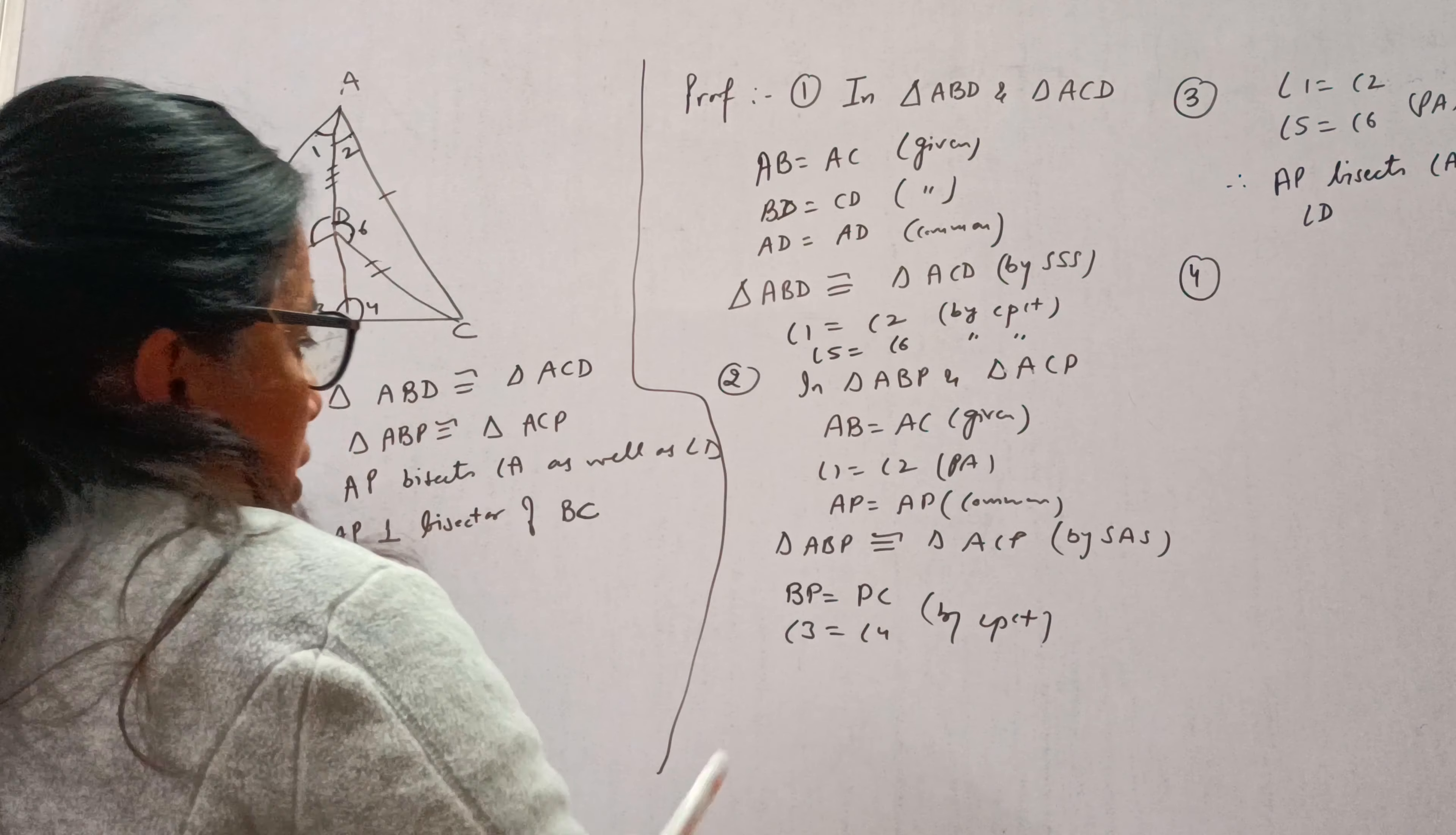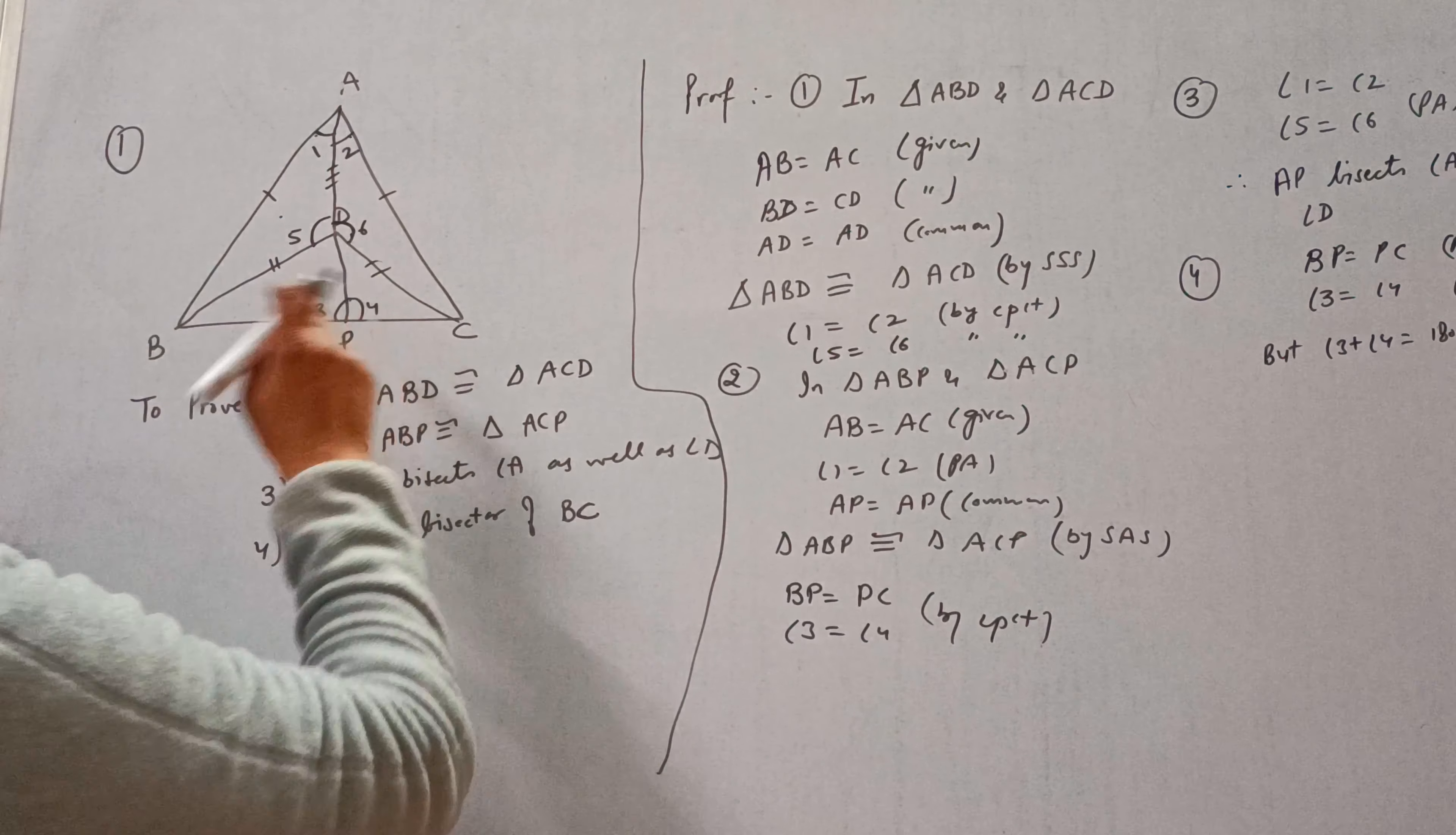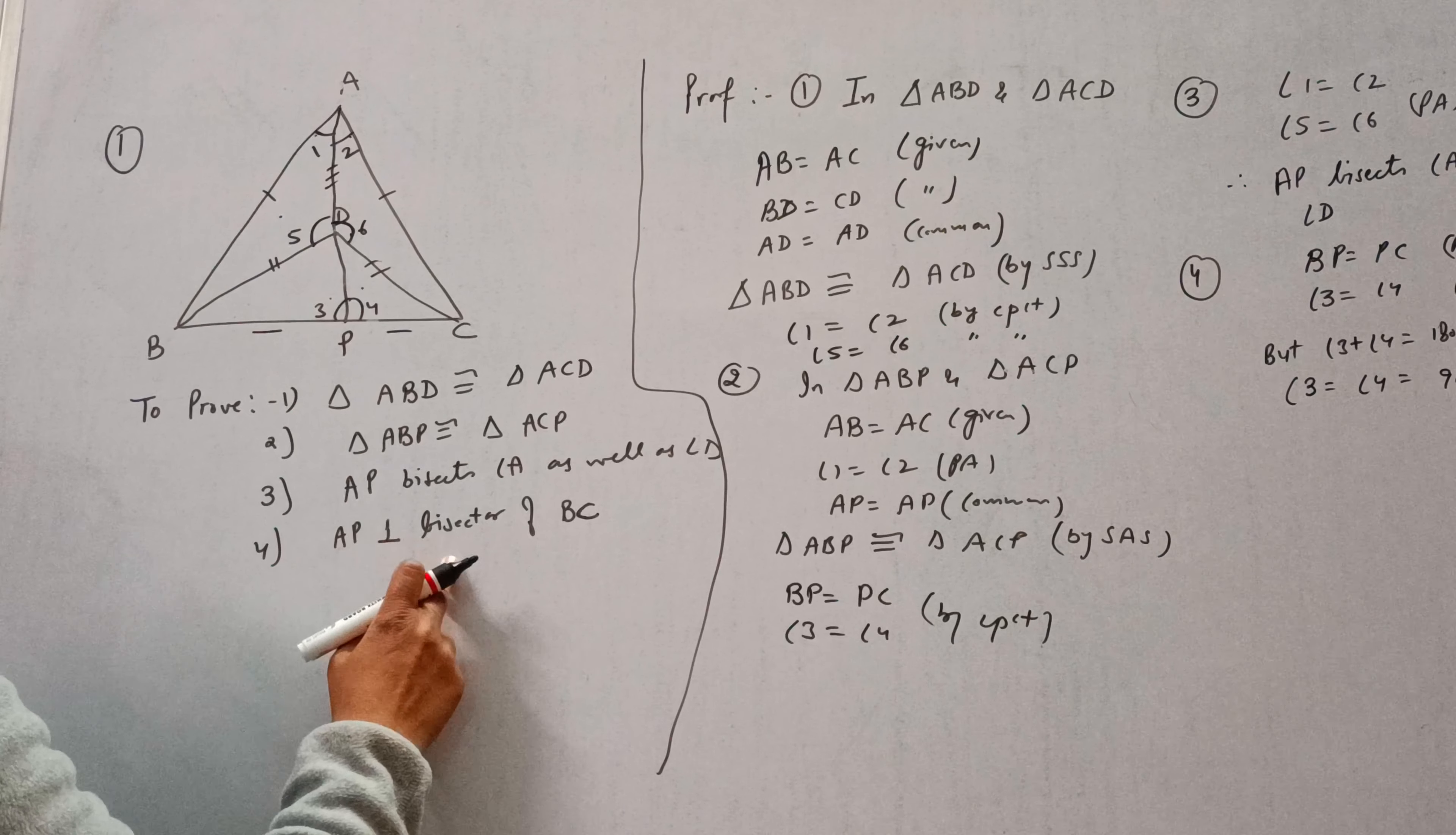Now part 4. See, we have proved BP is equal to PC, proved above. And angle 3 is equal to angle 4, proved above. But angle 3 plus angle 4 will be 180 degrees by linear pair. The sum of these 2 angles is 180, and these 2 angles are equal. Means they are of 90 degrees.